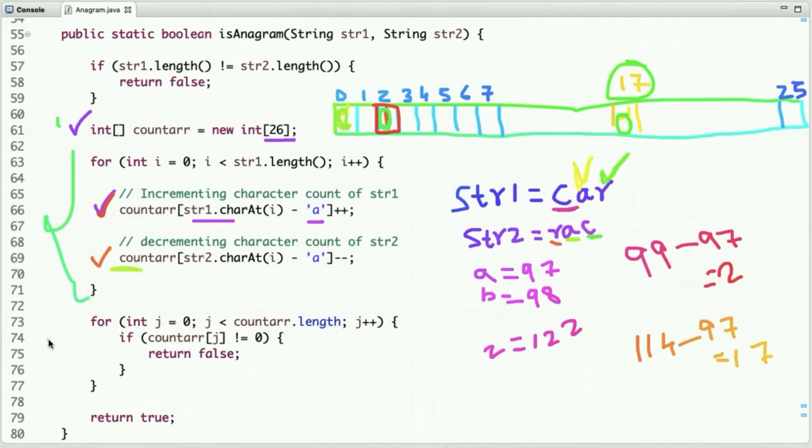After we come out of this loop, in this code we are traversing the array and checking if any index has a value which is not equal to 0, then it's not an anagram. If you see in this array, all the indices have values equal to 0, so we return true, so it's an anagram.